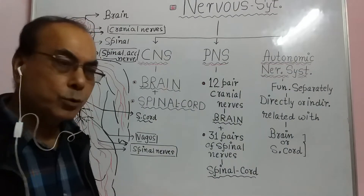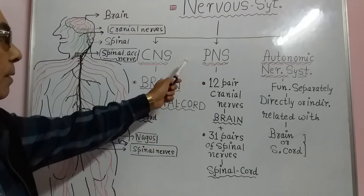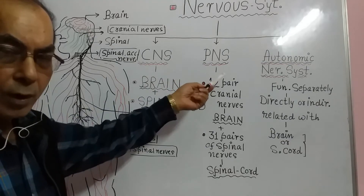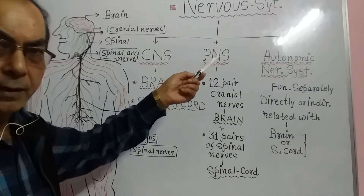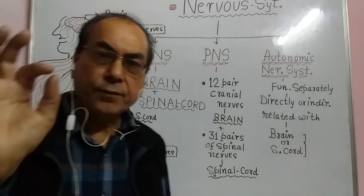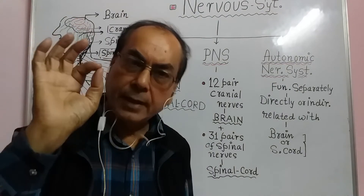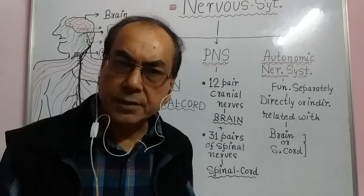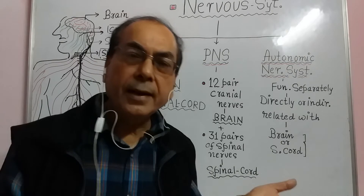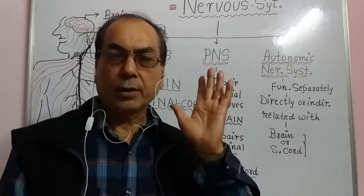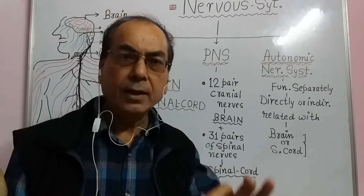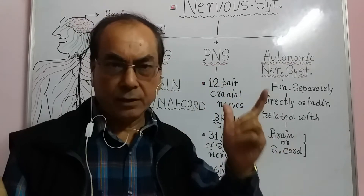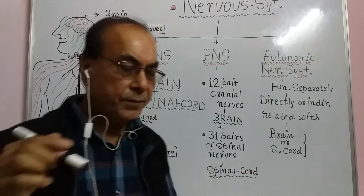Now let us come to the second part — the Peripheral Nervous System. What is this peripheral nervous system? The peripheral nervous system is that part of the nervous system which is related with the nerves only; in it we study only the nerves.